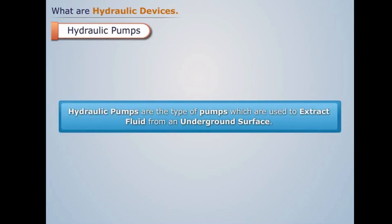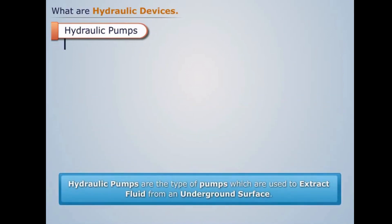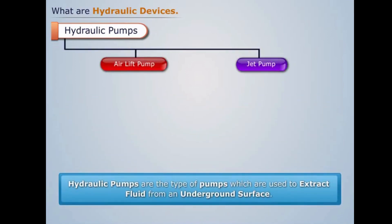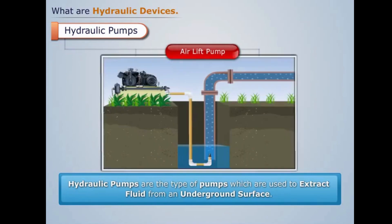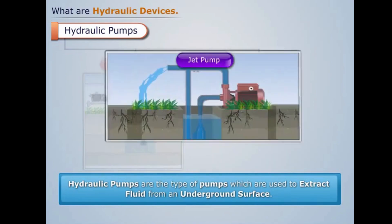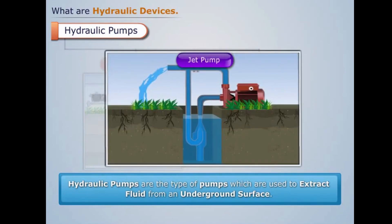Hydraulic pumps are the type of pumps which are used to extract fluid from an underground surface. The common examples of hydraulic pumps are air lift pump and jet pump.